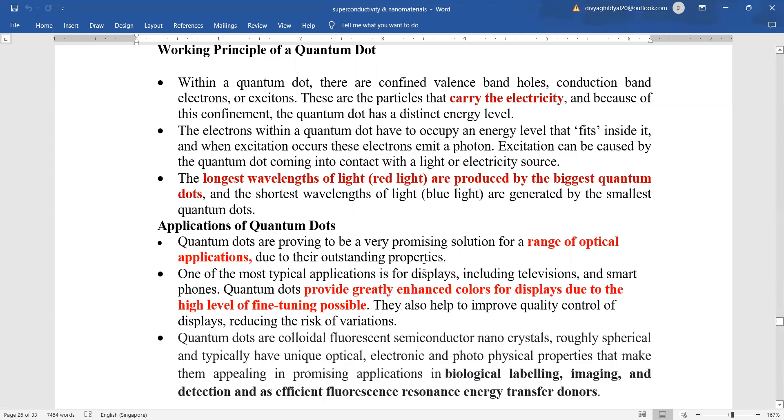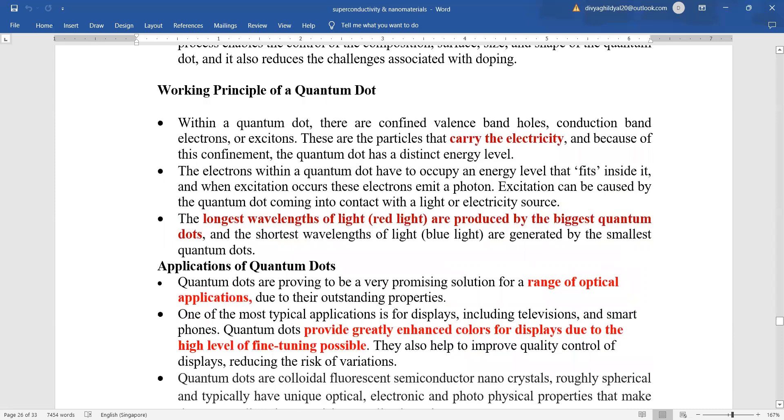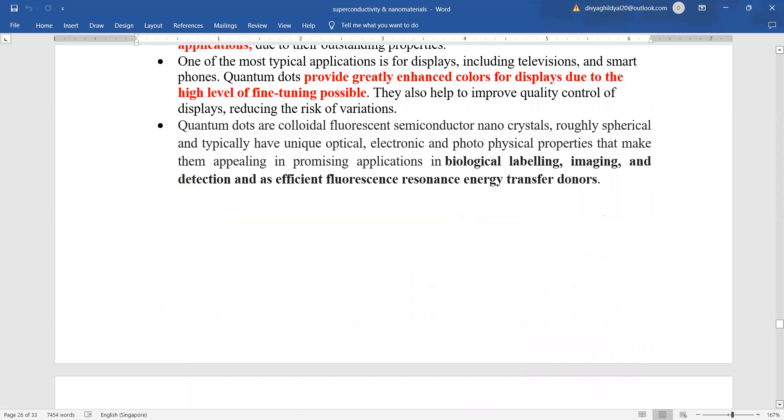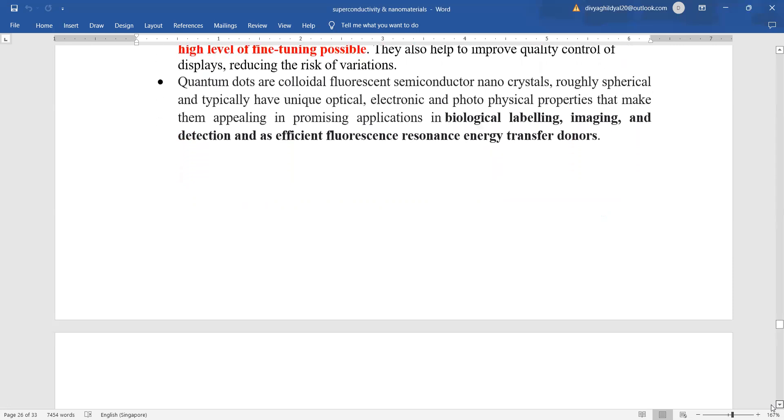The main applications of quantum dots are that they are found to be very promising solutions for a range of optical applications due to their outstanding properties. Quantum dots provide greatly enhanced colors for displays due to high level of fine tuning. They also help improve quality control of displays, reducing the risk of variation. Also, quantum dots are found to be very promising in biological labeling, imaging, detection, and as efficient fluorescence resonance energy transfer donors.